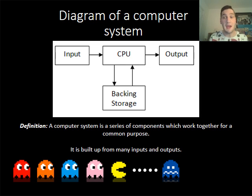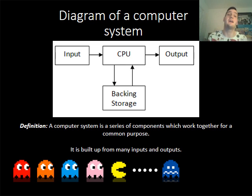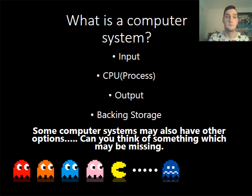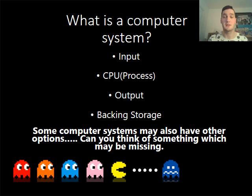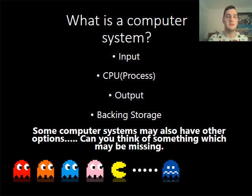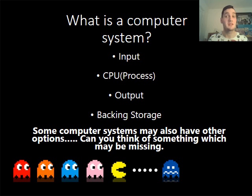What we mean by output is, for example, you may have a monitor, speakers, or headphones — anything like that is classed as an output. So a computer system is input, process, output, and backing storage. For those wishing to push yourself further, what if your computer system wanted to connect to another person's computer system? In that case you are going to need something else, and the item missing is communication devices.